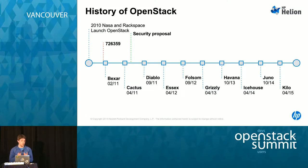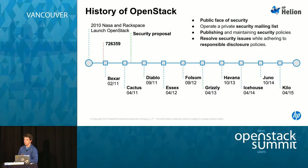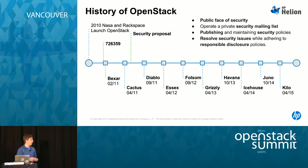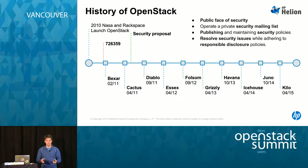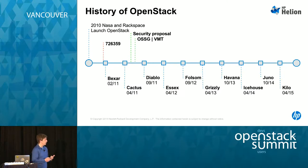Just after the Cactus release, there was a security proposal written by Jarrett Rain from Rackspace. It suggested a group that would be the public face of security for OpenStack, a private security mailing list, publishing and maintaining security policies, and resolving security issues while adhering to responsible disclosure policies. It was a great proposal, and it stayed as a proposal for quite a while.